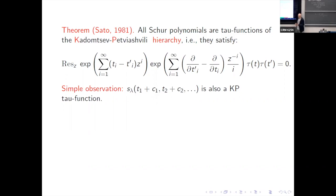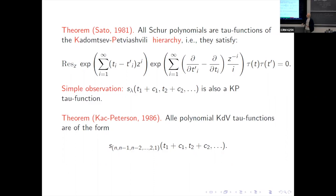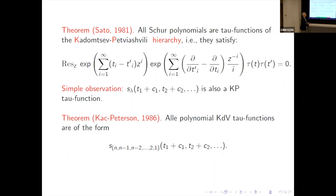Of course the first question is: are these all the tau functions? In fact no. But in a 1986 paper by Kats and Peterson on the infinite wedge space and KP, they showed in the last section that all polynomial KdP tau functions are of this form — a staircase going down, n minus 1, n minus 2, down to 1 — with all c's equal to zero. If you put in the c's you get more, and these are all the KdP tau functions.